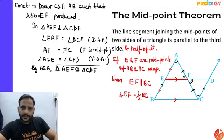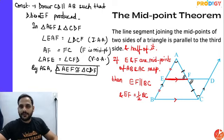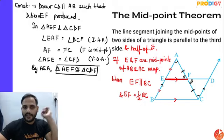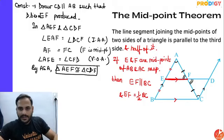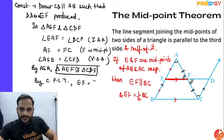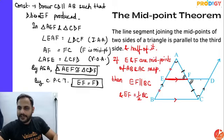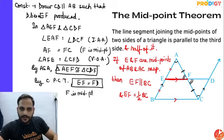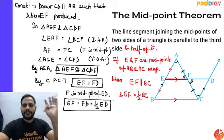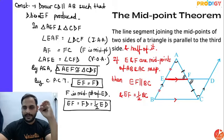By CPCT, EF equals FD — so F is the midpoint of ED, meaning EF and FD are each half of ED. Also by CPCT, AE equals CD.